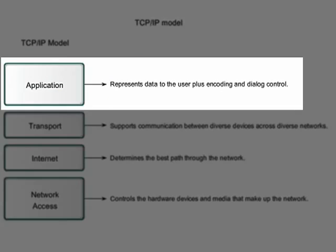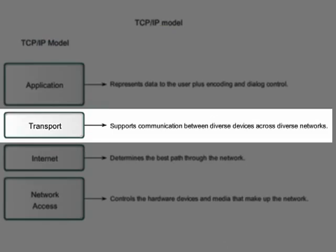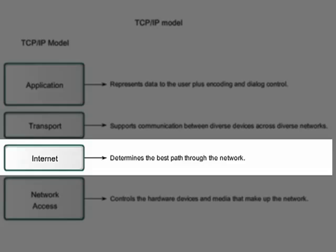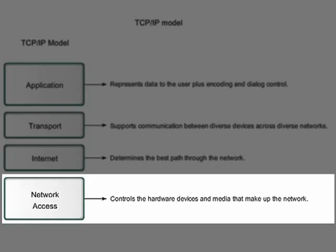The application layer is responsible for encoding data into a form that can be sent over a network, and for decoding data when it is received from the network. The transport layer supports communication between devices when messages are being sent across the network. The internet layer determines the best path for a message to be sent through a network. And the network access layer controls the hardware and the connections that make up the network.